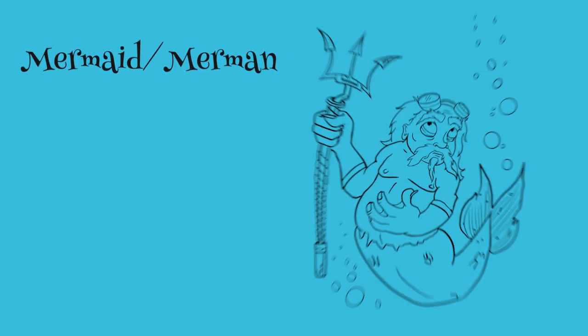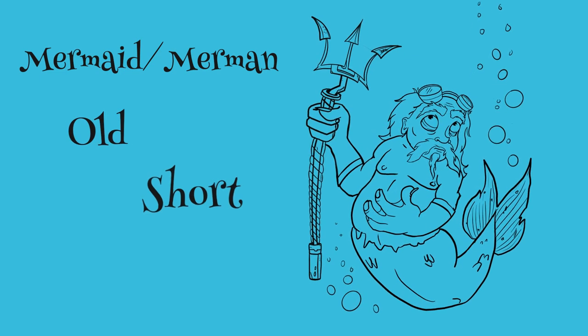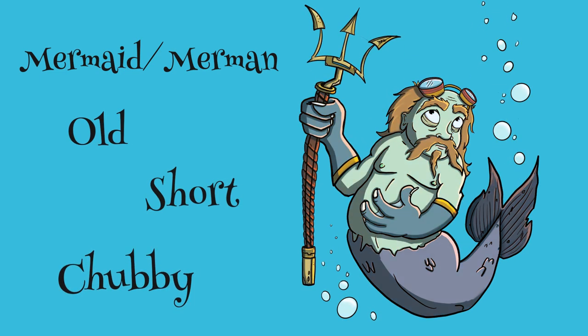Once you have all of that gathered, put together a quick list of the design elements you like and want to incorporate into your character. For my example, I decided I want to draw an old, short, chubby merman.